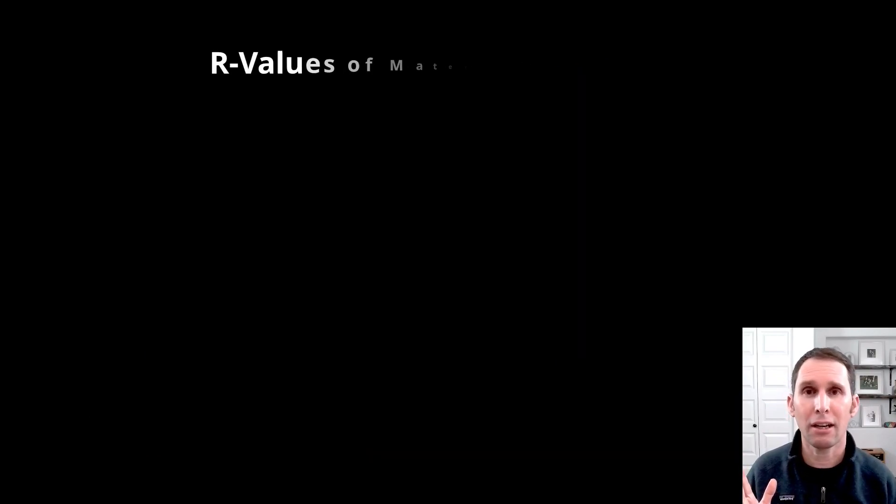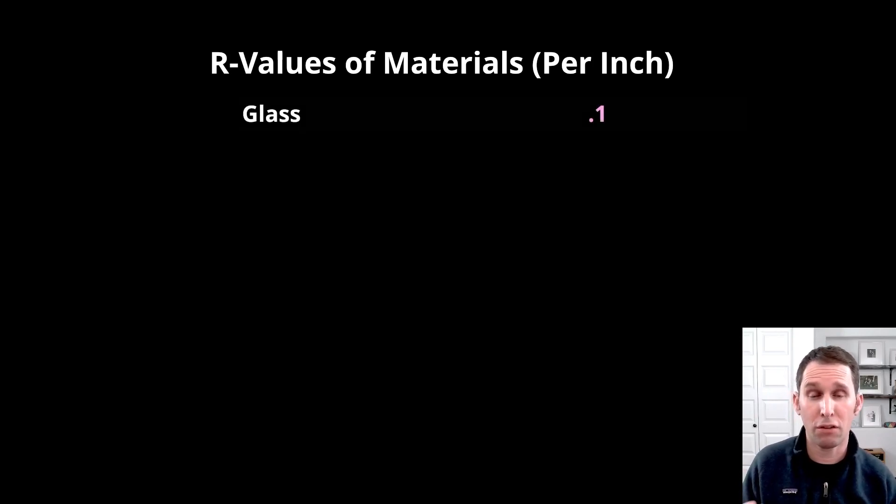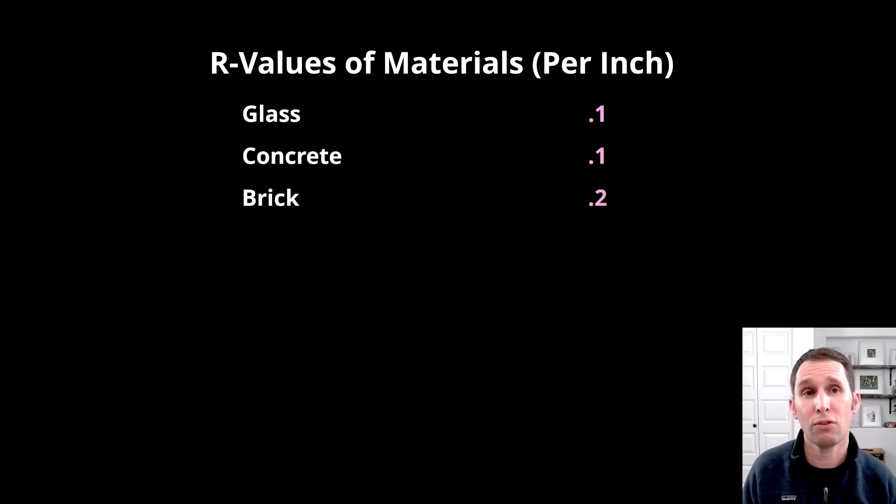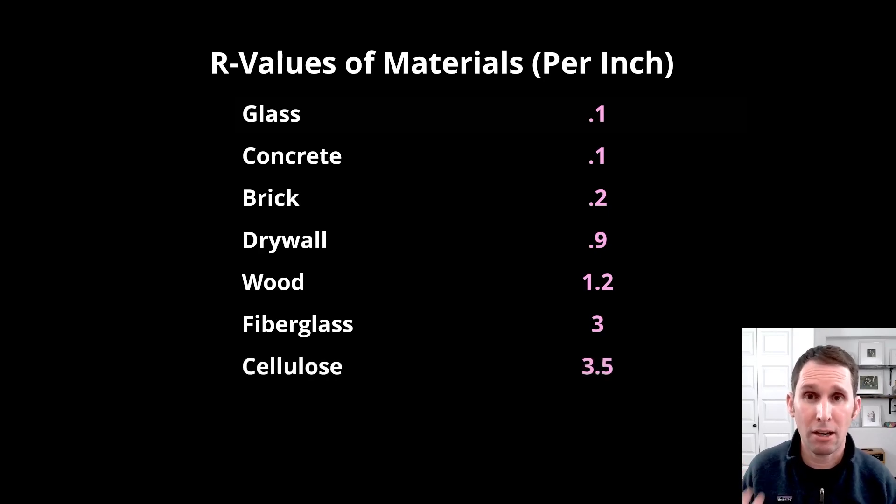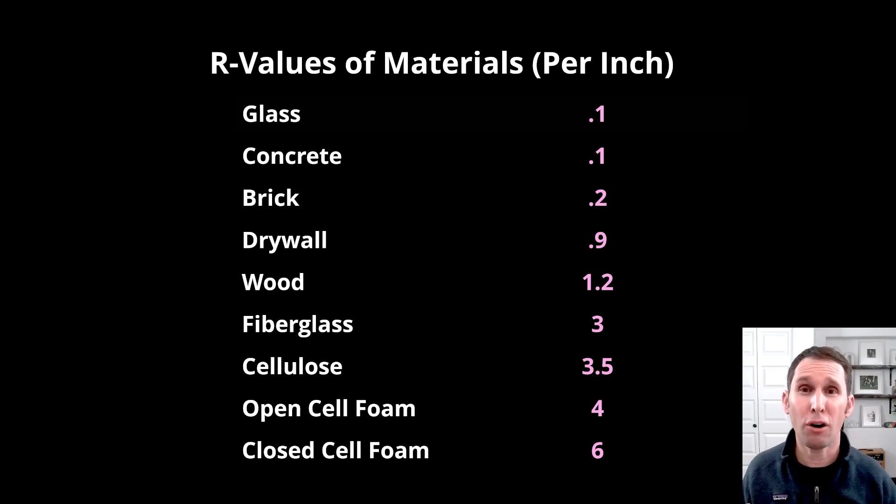So, if we take a look at a lineup here of different materials, you could see that glass is a very poor resistor of heat transfer. Concrete transfers heat very easily. Brick would transfer heat very easily. Drywall is a relatively poor resistor of heat transfer. So is wood. And then we get into the insulation materials like fiberglass, which is R3 per inch. Cellulose, which is R3.5 or R4. And even some foams like an open cell foam or a closed cell foam, which is R6 per inch, that would be 60 times more effective at resisting heat flow than something like glass.